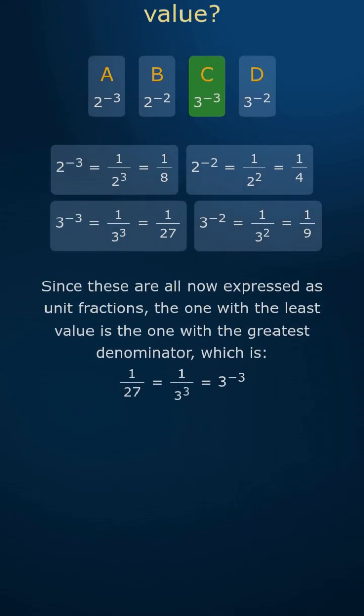Since these are all now expressed as unit fractions, the one with the least value is the one with the greatest denominator, which is 1 27th, equals 3 to the power minus 3.